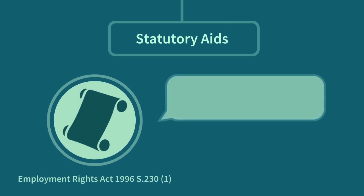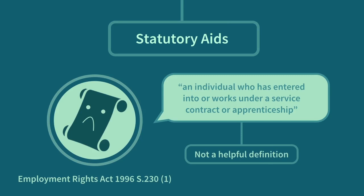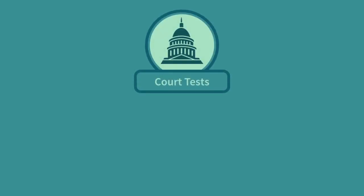The Employment Rights Act 1996 defines an employee as an individual who has entered into or works under a service contract or apprenticeship. This isn't very helpful, as it still leaves a number of questions — for example, how is a service contract or apprenticeship defined in the statute? A contract of employment is one of personal service. Thus, if the individual working can delegate their task or substitute a replacement, then the essential element of personal service is missing. The courts look at the reality of the situation and may ignore titles or labels given to the worker. The courts have devised tests to help make the distinction, but no one single test is conclusive. These tests tend to be vague and sometimes difficult to apply in marginal cases.